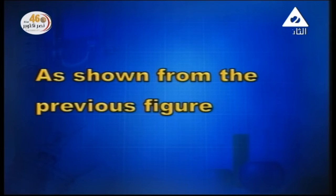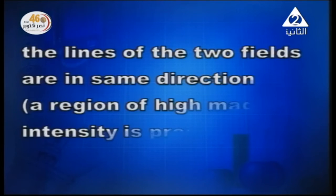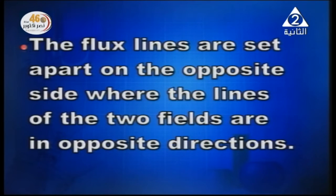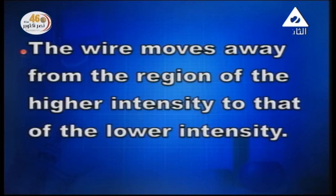As shown from the previous figure, when the two fields combine, the magnetic flux lines get closer on one side of the wire — where the lines of the two fields are in the same direction. We call this a region of high magnetic density or intensity. The flux lines are set apart on the opposite side, where the lines of the two fields are in opposite directions — a region of low magnetic intensity. The wire moves away from the region of higher intensity to that of lower intensity.